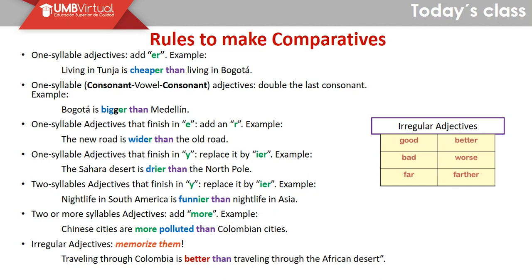The first rule is when you have one-syllable adjectives, you just add -er. Example: living in Tunja is cheaper than living in Bogota. The second rule is when you have one-syllable adjectives that finish in consonant-vowel-consonant, you double the last consonant. Example: Bogota is bigger than Medellín. Next rule, one-syllable adjectives that finish in -e, you just add an extra -r. Example: the new road is wider than the old road.